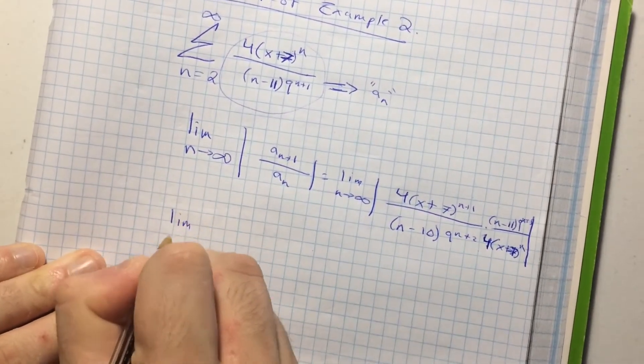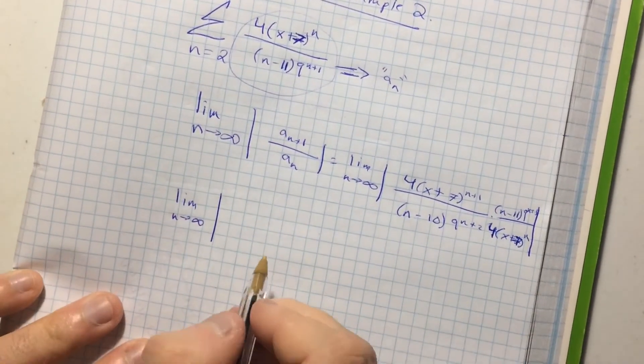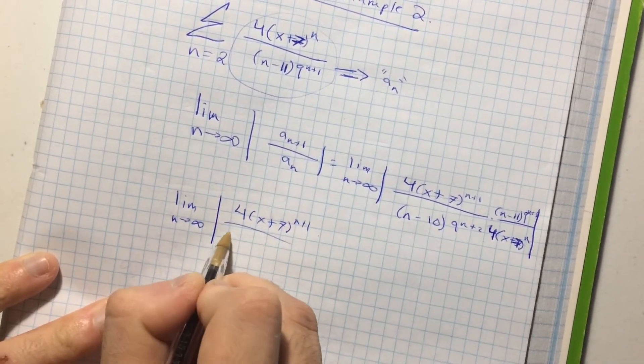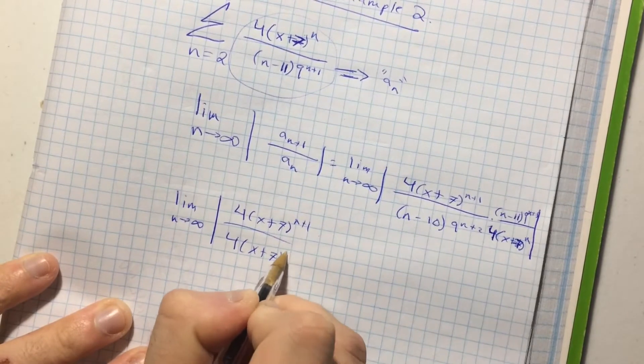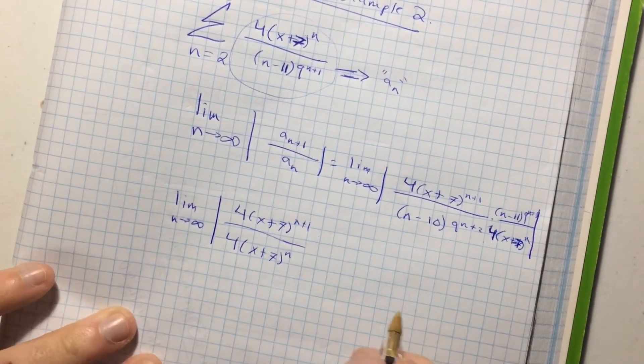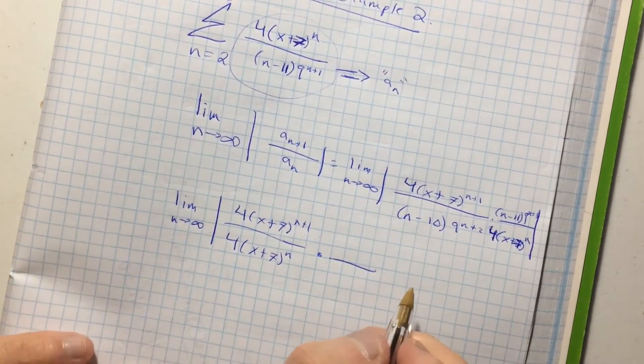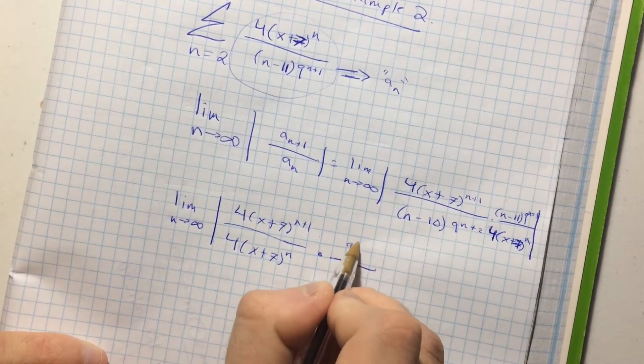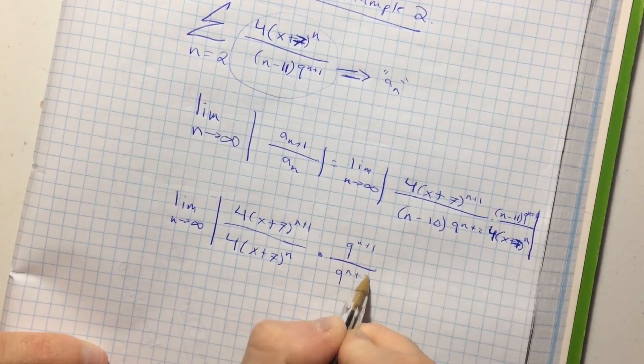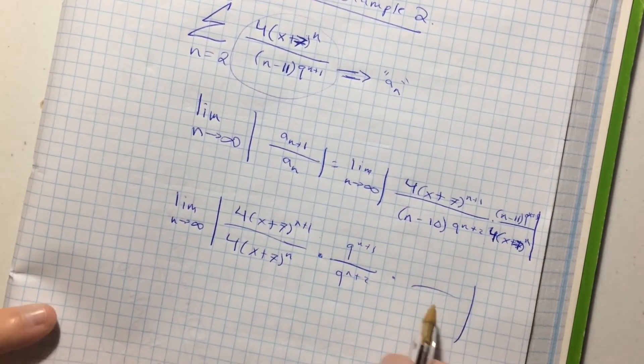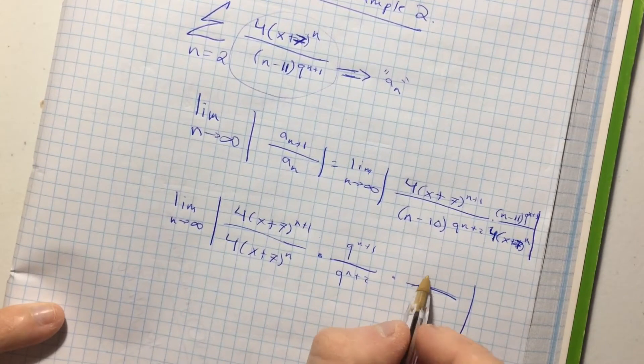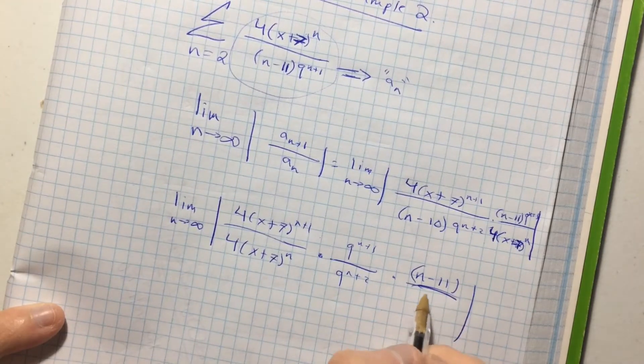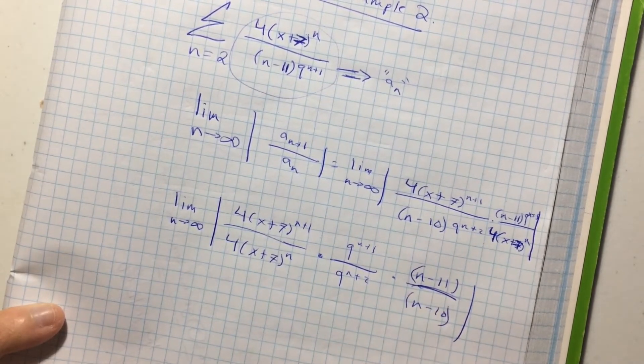So this is now 4 x plus 7 to the n. That's a 7. I'm going to rewrite this. Sorry, so it's the limit as n approaches infinity of the absolute value of x plus 7 to the n plus 1 over my homie. Yep. Cool. All fine and dandy. So I'm basically putting stuff together, like right next to each other, whatever is like relevant. So this is 9 to the n plus 1, and this is 9 to the n plus 2. And that's multiplied by the division of the reciprocal of n minus 11 over n minus 10. Cool.